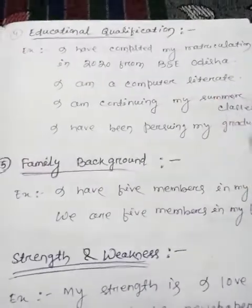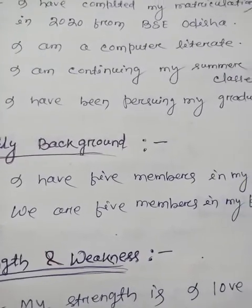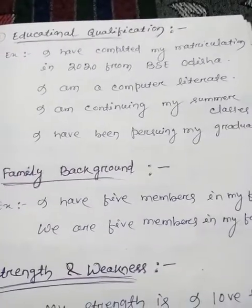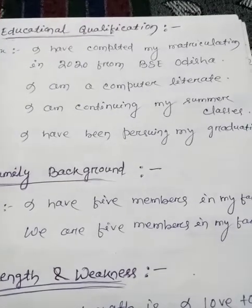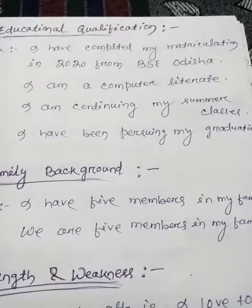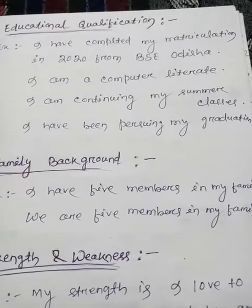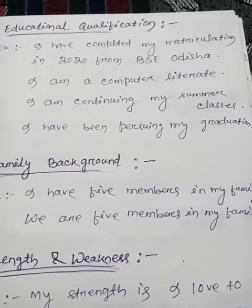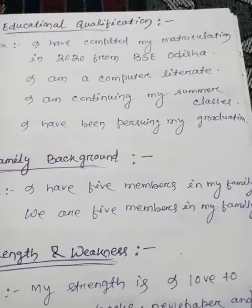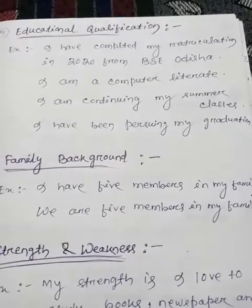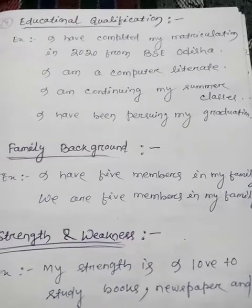The fourth step is educational qualification. To introduce your educational qualification, you have to tell from the lower level to the higher level — first matriculation, then +2, then graduation, then post-graduation, then others. For example: 'I have completed my matriculation in 2020 from B.A.C., Odisha.' If you are a computer literate, you can say 'I am a computer literate.' If you are still continuing, say 'I am continuing my summer classes' or 'I have been pursuing my graduation.'